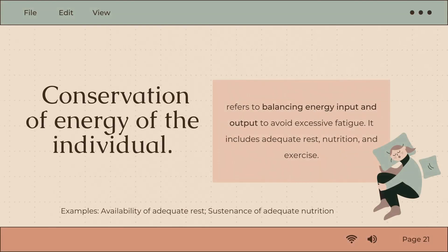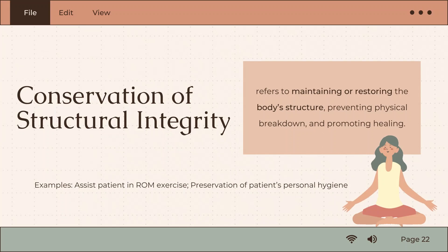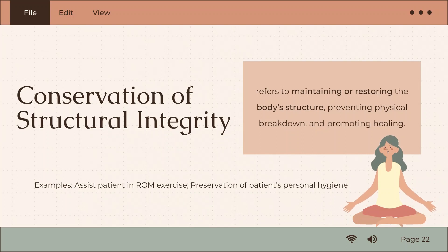The first conservation principle is conservation of energy, which refers to balancing energy input and output to avoid excess fatigue, and includes adequate rest, nutrition, and exercise. Conservation of structural integrity refers to maintaining or restoring the body's structure, preventing physical breakdown, and promoting healing.